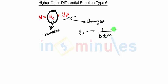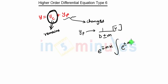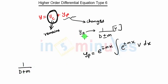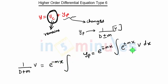In this case, yp will be calculated as e^(∓mx) times the integration of e^(±mx) · v dx. This indicates that when we have 1/(D+m) to calculate yp, if we have (D+m) into v, then its solution will be given by e^(−mx), because the sign will be opposite. So here we have plus, so here it will be e^(−mx) integration of e^(mx) · v dx. This is the solution of 1/(D+m).